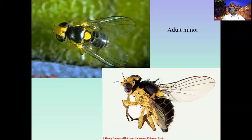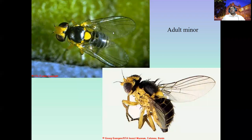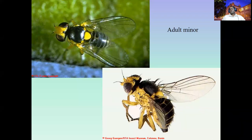The adult leaf miner has a blackish body with yellowish markings — this distinguishes it from fruit flies, which are yellowish-orange, and houseflies, which lack the yellowish color. Wings are transparent in both leaf miners and fruit flies, but the body color difference helps identification.